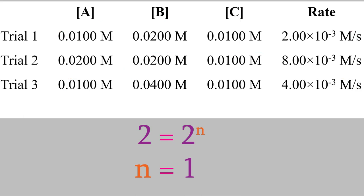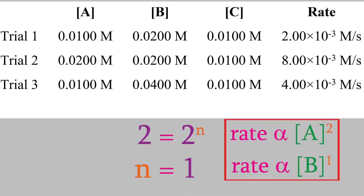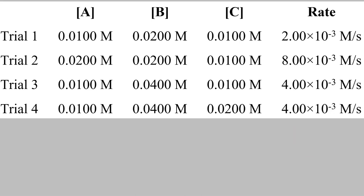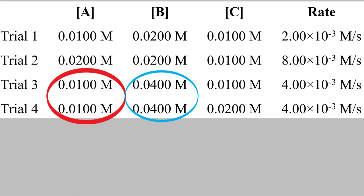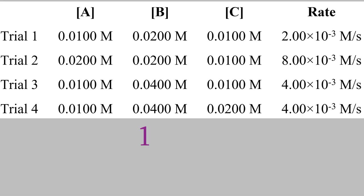So now we know the exponents for reactants A and B. We need to take one more trial so that we can find the exponent of reactant C. Here's the data. Again, we need two of the concentrations to be constant. If you compare trial 4 to trial 3, you'll notice that the concentrations of A and B are the same — those are the controls. If we take the ratio of the rates, we get 1. And the ratio of the concentrations is 2. That means the exponent this time is 0. It turns out that any number raised to the power of 0 is equal to 1.